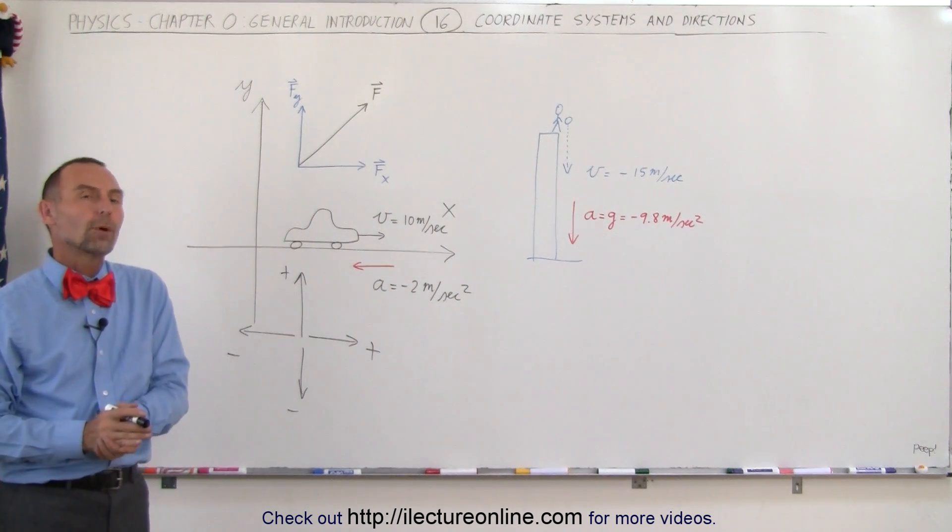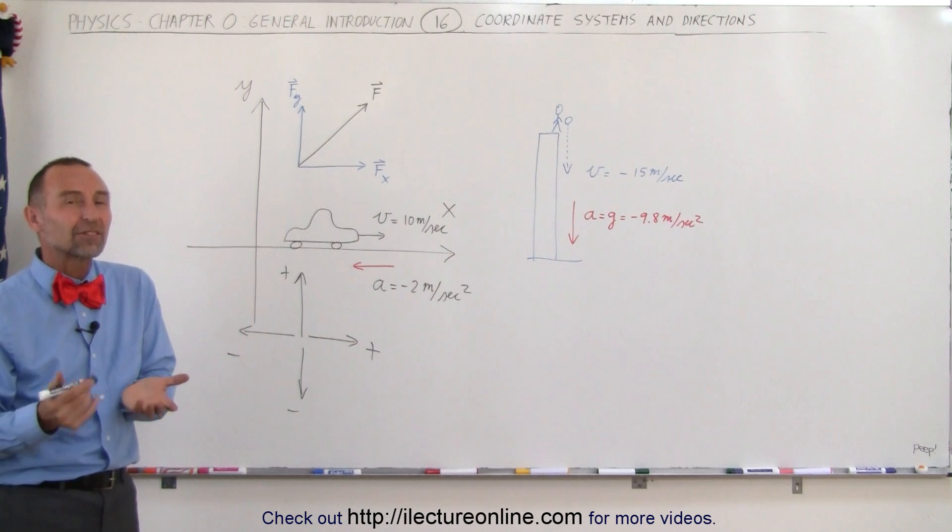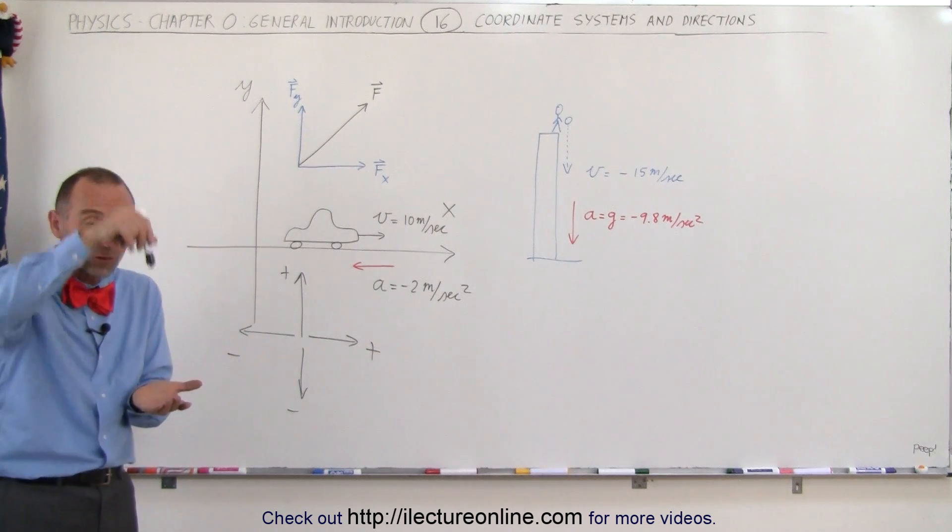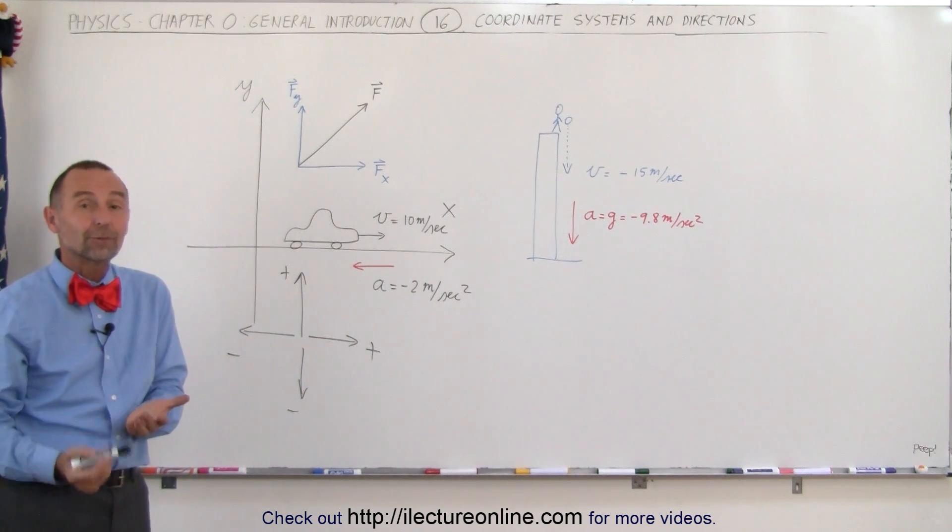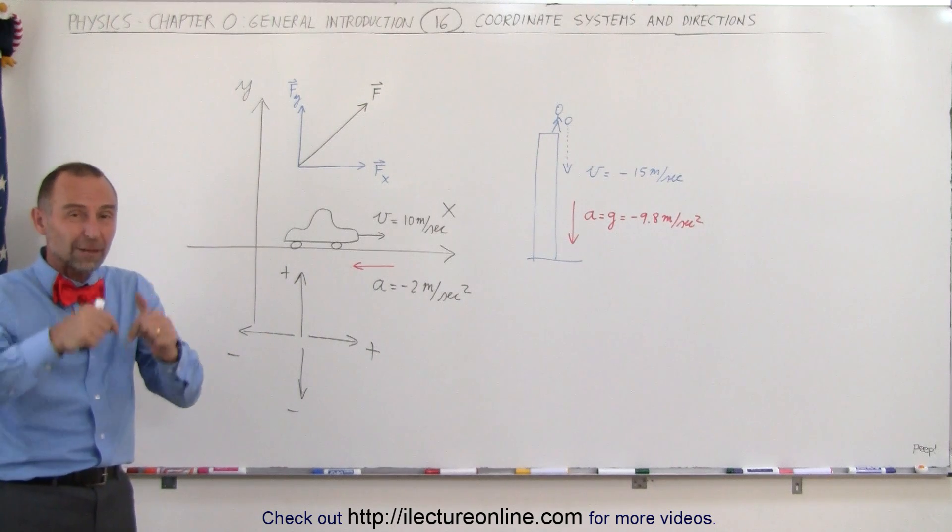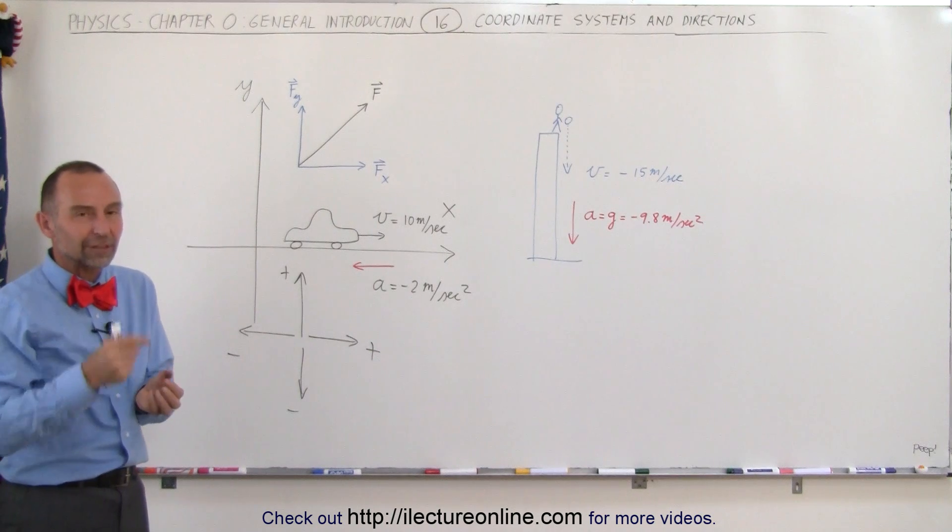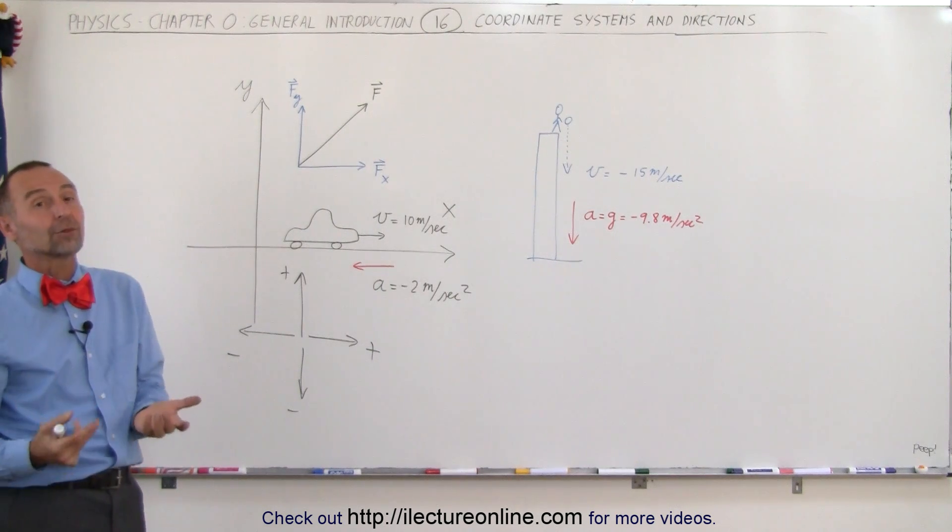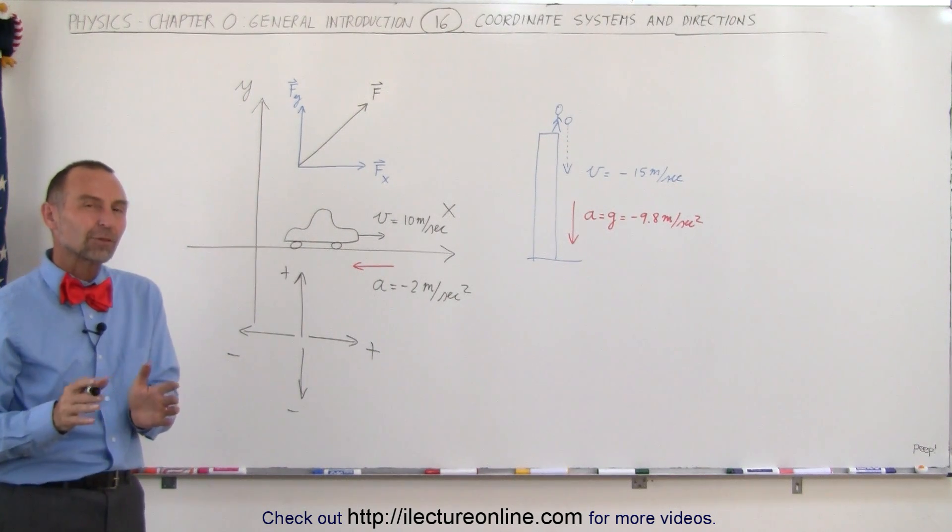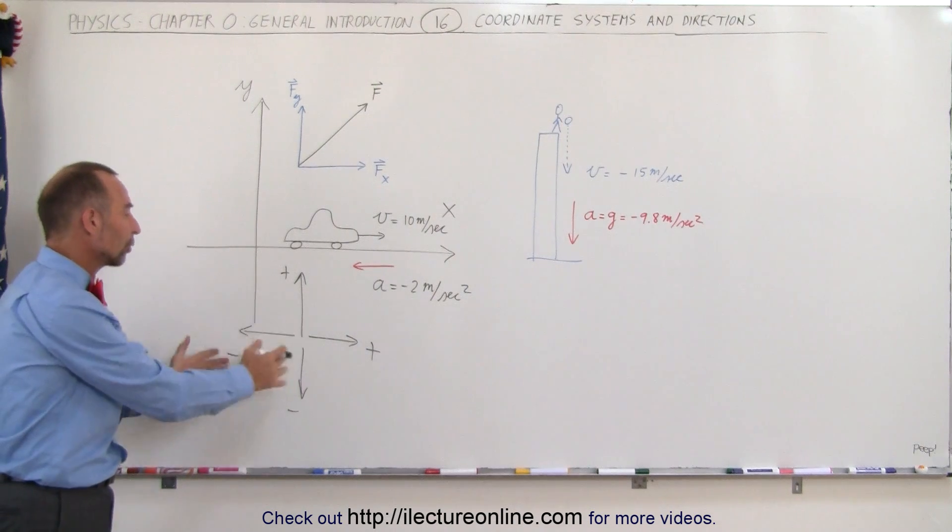Now there's exceptions to that. When we talk about fluids and fluid dynamics, typically in fluids when you go down, the number is positive. When you go up, the number is negative because the deeper you go in the fluid, the greater the pressure, the more fluid is on top of you. And so therefore they say downward is a positive direction. But that's the exception rather than the rule.